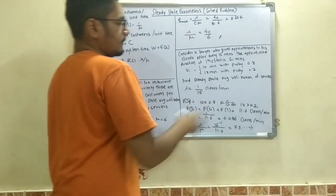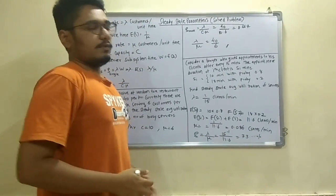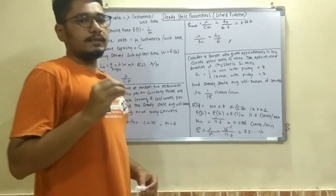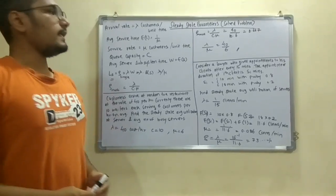So in percentage if you represent this, then the lawyer would be busy for 73 percentage of most of his time. So this was all about the steady state parameters, solved problems and the concepts.